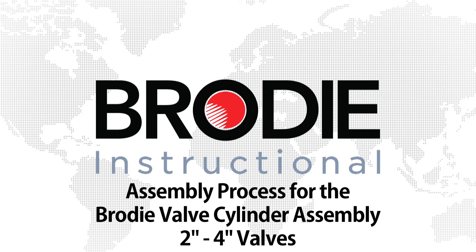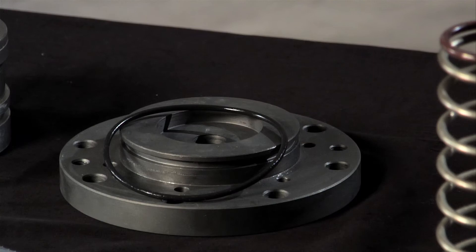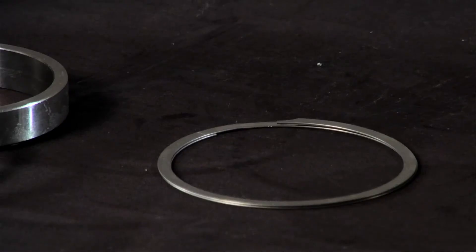This is the assembly process for the Brody valve cylinder assembly. For this project you'll need a cylinder, cylinder head, piston, valve spring, seal ring, retaining ring,